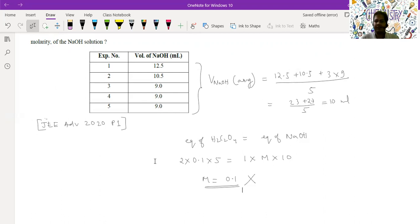We'll ignore the first two readings. The first value is 12.5, second value 10.5 - we'll ignore these two values. From the third reading onwards, the values are concordant: 9.0, 9.0, 9.0. Normally we can take variations of 0.1 mL in the concordant reading. We'll calculate the average volume of NaOH consumed by considering the last three values. This is an important concept here. This is a wrong solution - the mistake is we have considered 12.5 and 10.5. We don't have to consider the first two readings; we'll consider only the concordant readings: third, fourth, and fifth.